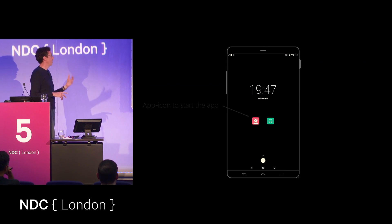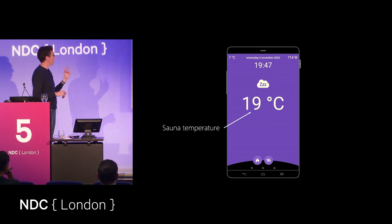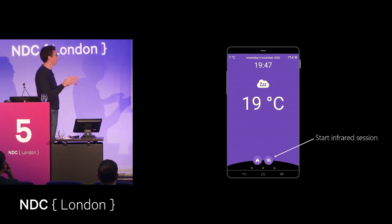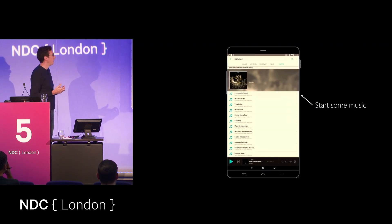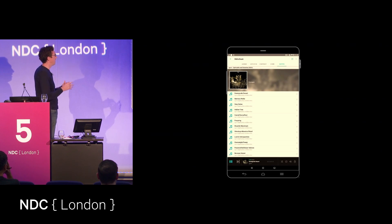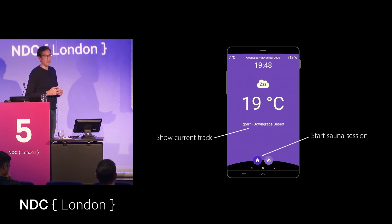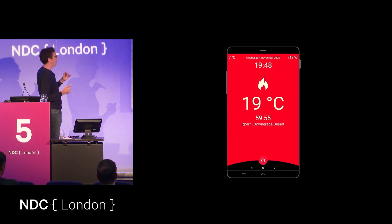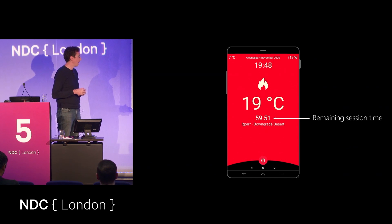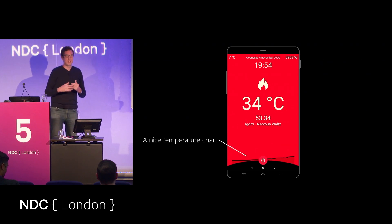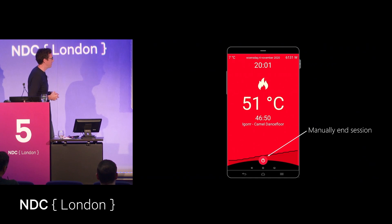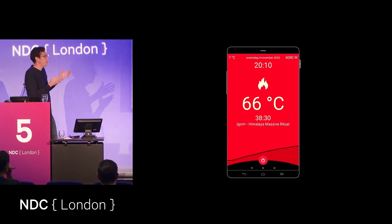The app itself is very simple. It shows the current temperature in the sauna. On the top is the outside temperature just for information, and on the top right is the power usage. At the bottom, you can start a sauna session or start the infrared session. I also tried having music displayed — I have an application on my Android device to play audio via Bluetooth, and there are Bluetooth speakers inside the sauna. When I go back to the application, it automatically shows the current track playing. If you start the session, it counts down — by default one hour — and shows the power usage and a graph of the temperature.